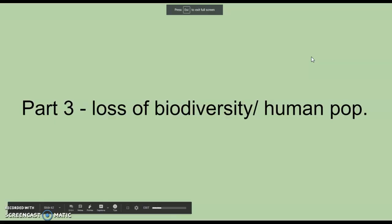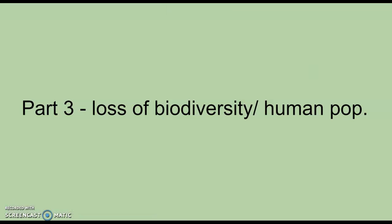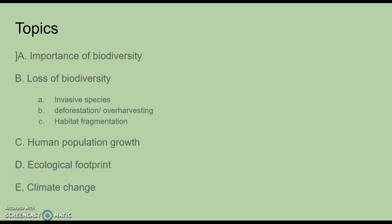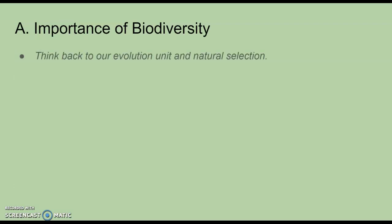All right, our last section of notes for the year. We're on ecology still — this is our last part of ecology. We're going to talk about biodiversity, how it's becoming less abundant, and talk about our human population more specifically. The topics today are: the importance of biodiversity, the loss of it, human population growth, our ecological footprint, and climate change.